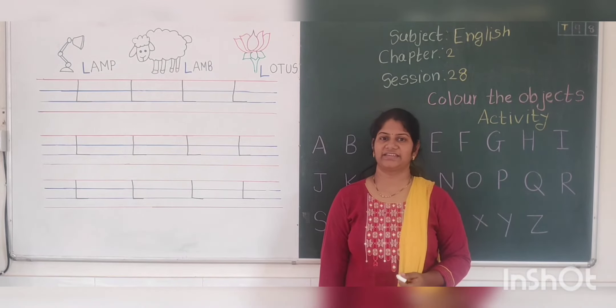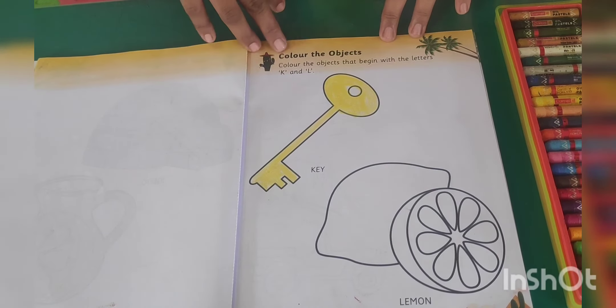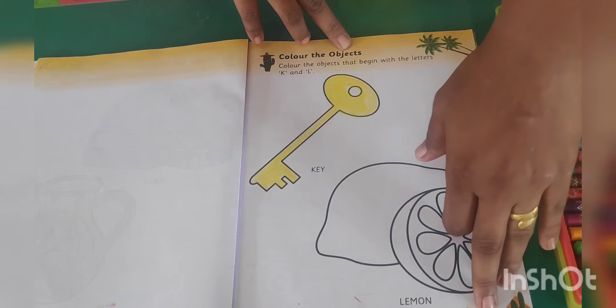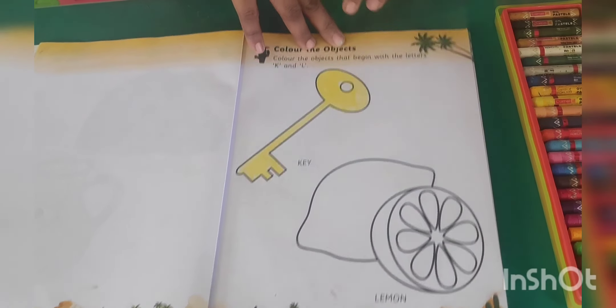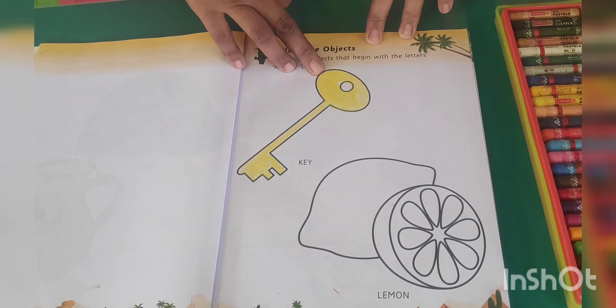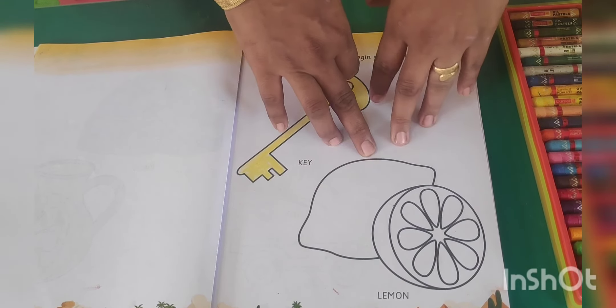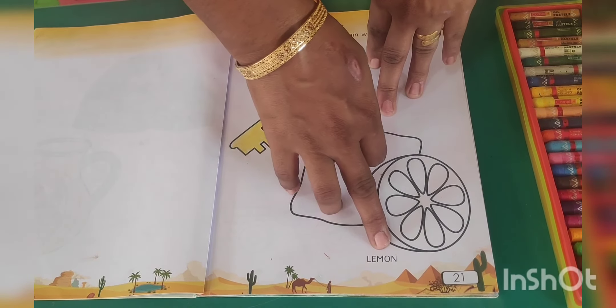Now activity. This is your activity book. Colour the objects, page number 21. Colour the objects that begin with the letter K and L. I have taught you how to colour the key. Now see here, L for lemon.